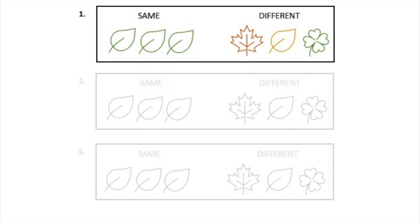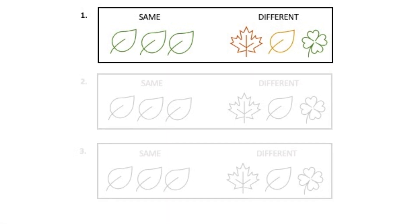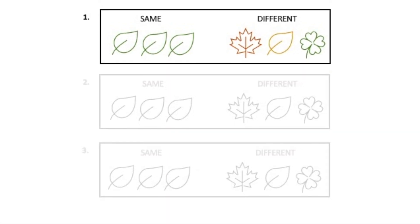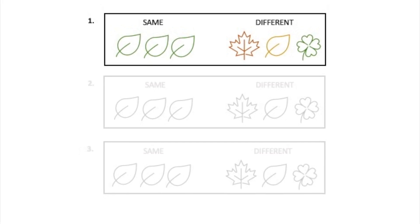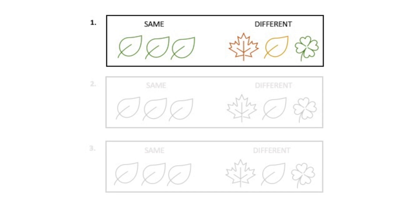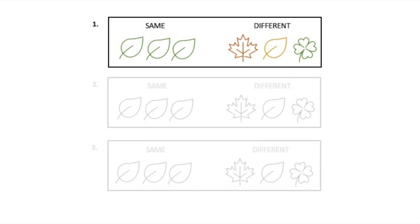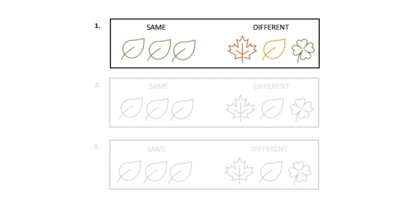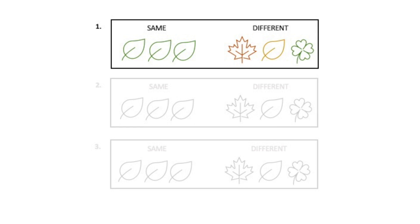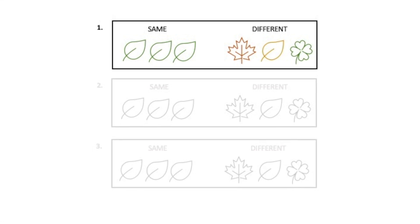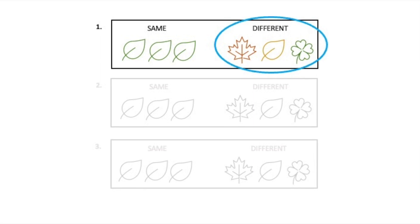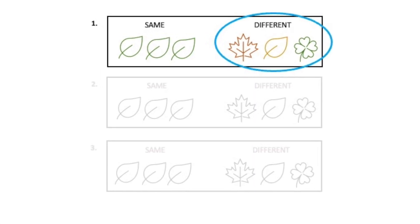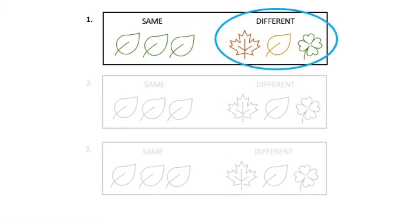Here is box number one. Here's box number one again. Did you color the leaves that are different? Then you were right. Those three notes were different.